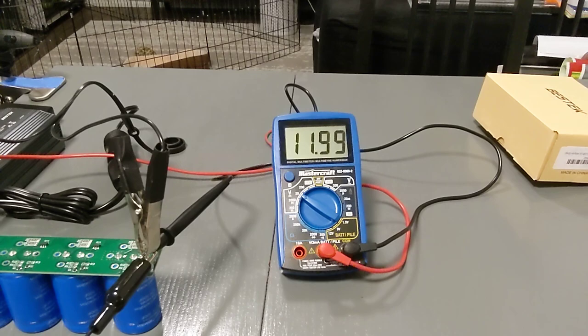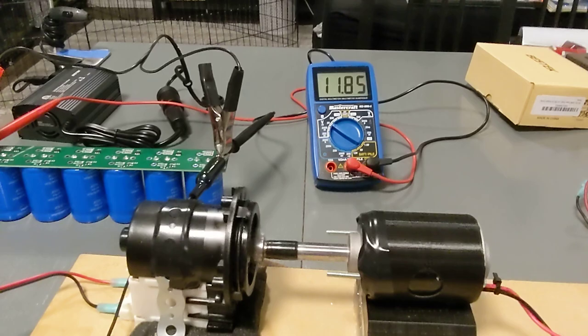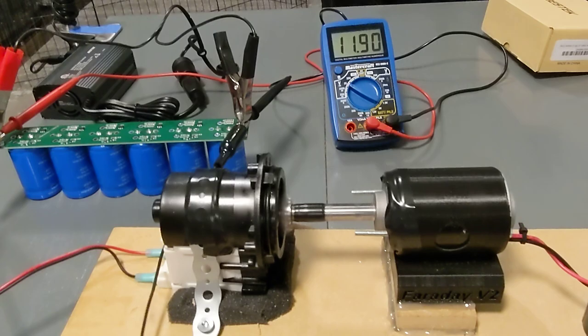It's climbing. It kind of fluctuates, goes up and down but it is climbing. 11.8 volts. Now I don't have this cranked out all the way, so it's about three quarters. 11.9 volts.